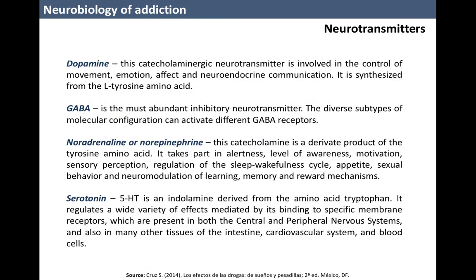Neurotransmitters are the interlocutors in conversations between neurons. In general terms, they are substances with a simple chemical structure grouped under three broad categories: amino acids, amines, and peptides. These substances intervene in the communication between neurons that control very different functions.